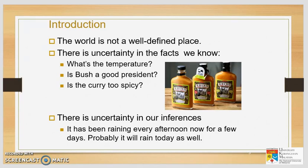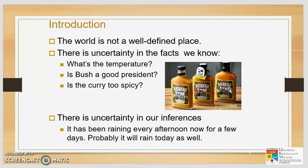How do we say that Bush is a good president? How good is good? How spicy is too spicy? In restaurants, they will prepare three types of sauce: original, medium hot, and extra hot. We try to quantify this because we cannot describe how spicy is too spicy — different people have different levels of acceptance. For example, based on experience, it has been raining every afternoon, so probably it will rain today. That is uncertainty.